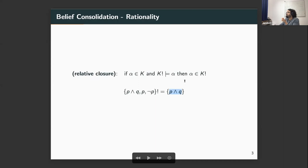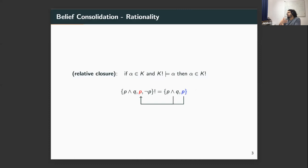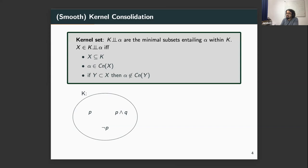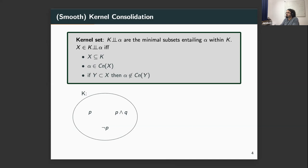What relative closure says is: if you want to keep p and q, please also keep p — do not remove more than you should. On one hand, we have the set of rationalized postulates that give some notion of minimal change. But what we really want is to construct a consolidation operation that satisfies these rationalized criteria. One of the strategies is to use smooth kernel consolidations. These operations basically slice your knowledge base into minimal inconsistent subsets, which we call minimal inconsistent kernels.